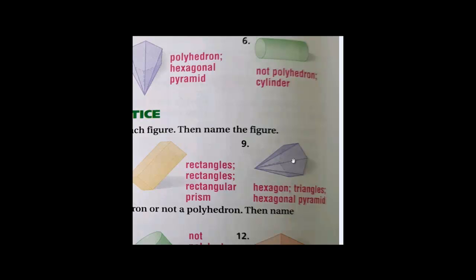Question nine — we have only one base and the faces are triangles, so it's a pyramid. What is the name of the base? Let's count the sides: one, two, three, four, five, six — six sides means it's a hexagon. So it will be a hexagonal pyramid.